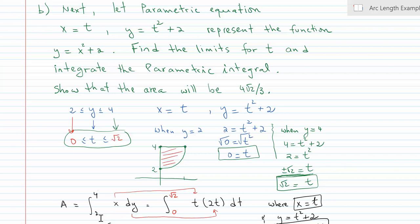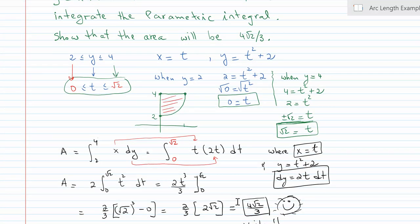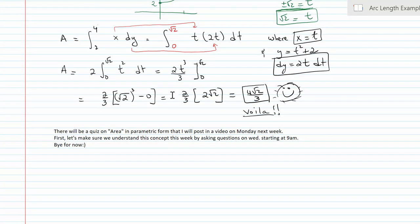Since we know in rectangular form it's the integral of f(y) dy, and f(y) by definition is x, that's why you see x in the integrand — and x can be replaced by t. dy is simply the derivative of t² + 2, which is 2t dt, and my limits have been determined. I'll let you work through the integration — it shouldn't be too difficult — and you'll find that you get the answer 4√2 over 3.